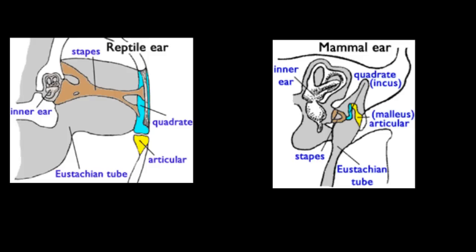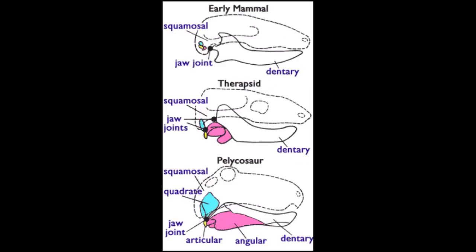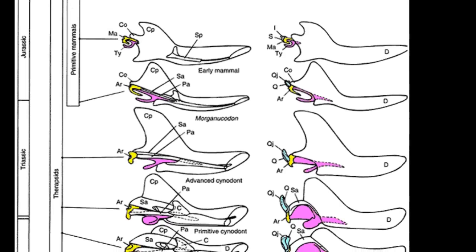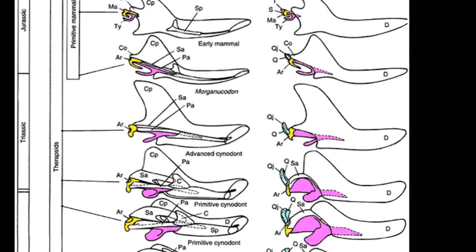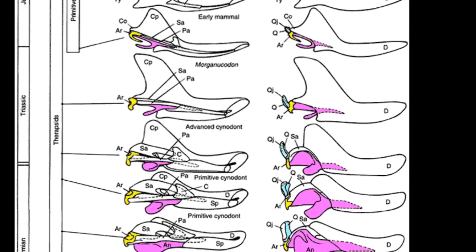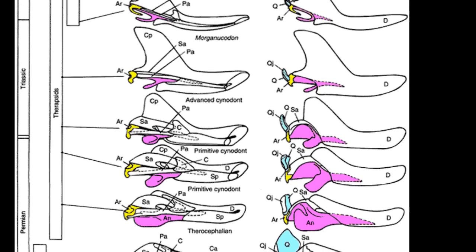But how can evolution confirm this? By looking at fossils of the organisms in between the start and end points. When we do this, we find the precise changes needed to confirm evolution — we see the quadrate and articular bones of the reptilian jaw being pulled back and modified for function in the middle ear. Amusingly, it's not just one fossil showing these changes; there are dozens demonstrating this precise change in the perfect sequence. Furthermore, when you date the fossils, they are all at the perfect age.